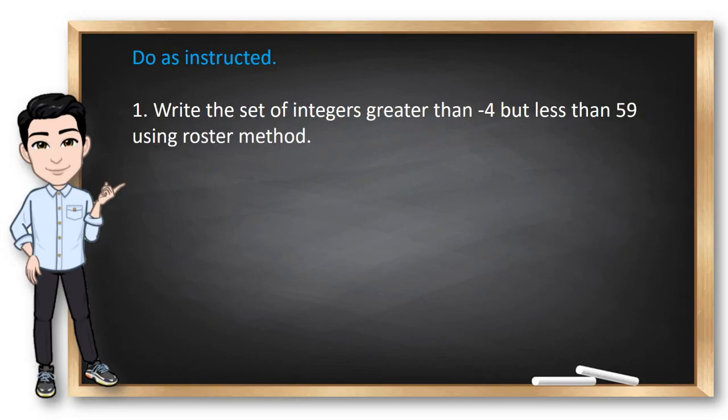Now, how about we try these examples. Write the set of integers greater than negative 4 but less than 59 using the roster method. Using the roster method, we will start with negative 3 because it's the next highest integer to negative 4. We cannot use decimal numbers here because we only need integers. So, the next one is negative 2, the next is negative 1 and then followed by 0. Now, since we established our pattern, we can now use ellipses, 3 dots and up to 58. Why 58? Of course, because the numbers should be less than 59.